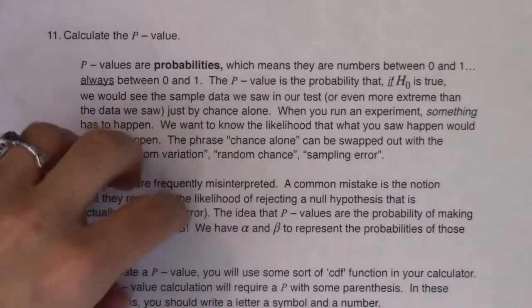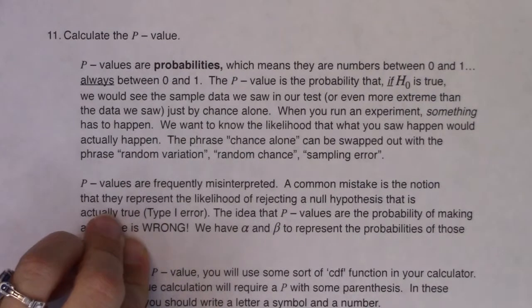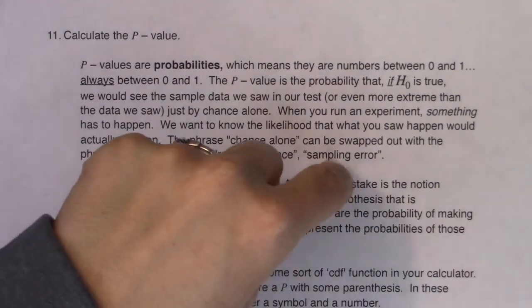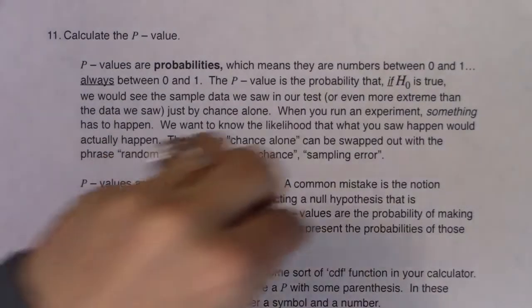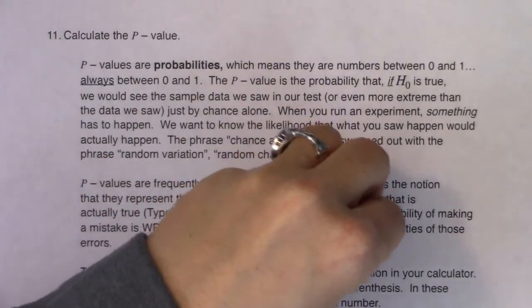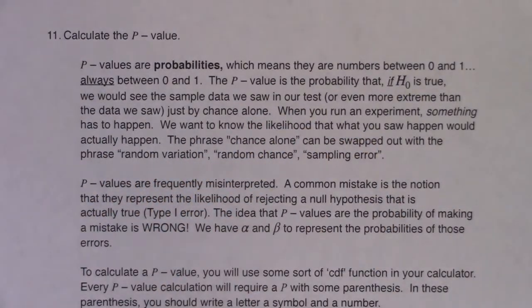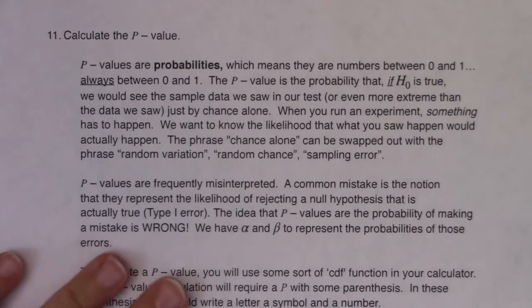It's the probability that if the null is true, is what we're seeing in our sample data very likely? If the null is true, what is the probability that what I'm seeing in my sample data, what is that probability of it actually happening?